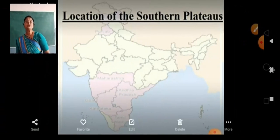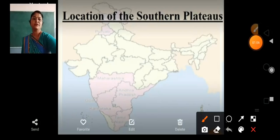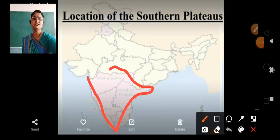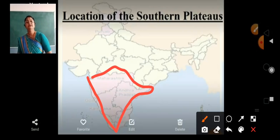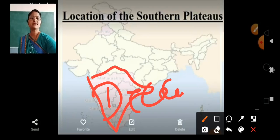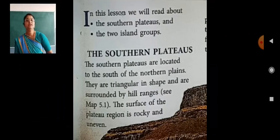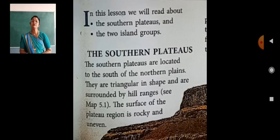Now students, location of the Southern Plateau. The Southern Plateau is located in the south direction, and that plateau is also called the Deccan Plateau. Is plateau ko hum Deccan Plateau ke naam se bhi jante hain. Today we will discuss about the Deccan Plateau. In this lesson we will read about the Southern Plateaus and the two island groups.